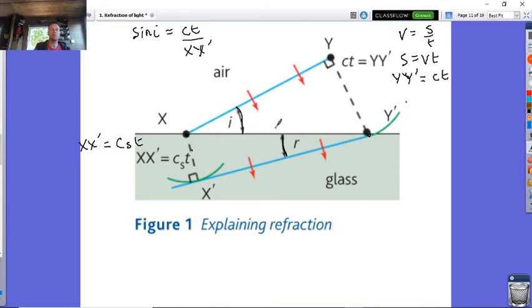The opposite over here is going to be ct, and your hypotenuse is going to be XY'. That means by rearranging this equation, ct is then equal to sin i times XY'. Taking this equation now, sine r, which is your angle of refraction, is going to be the opposite, which is cst, divided by the hypotenuse, which is going to be XY'.